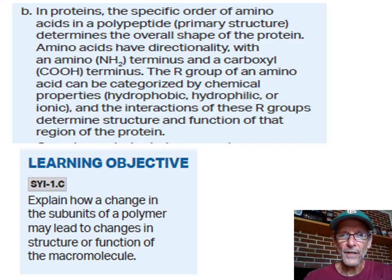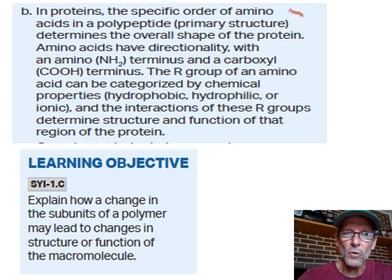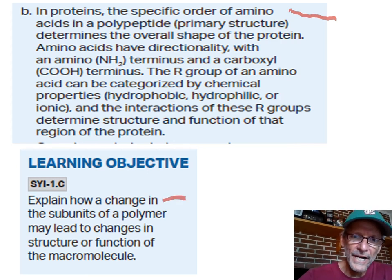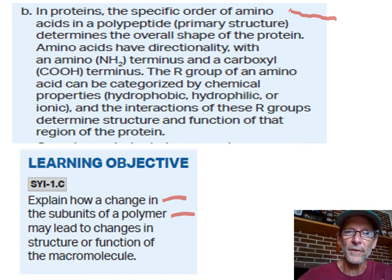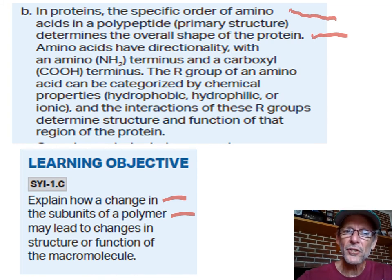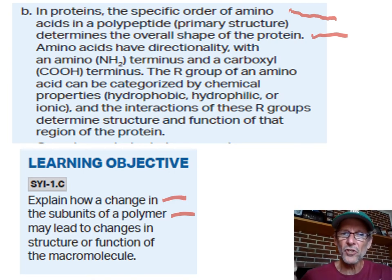Here we have the idea that the specific order of amino acids in a polypeptide — which means if you change one of the subunits, one of those amino acids — you might change the overall shape of the protein, and the overall shape is what determines its function. Shape and conformation are the same thing, and that's a word that's commonly used here: conformation.